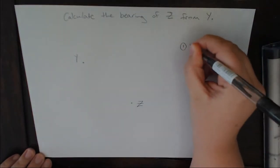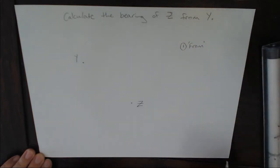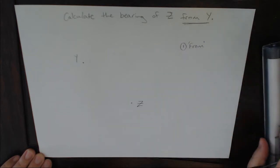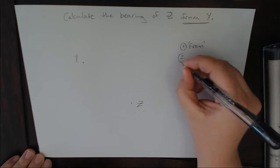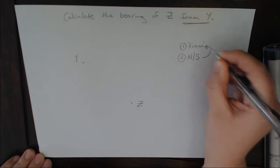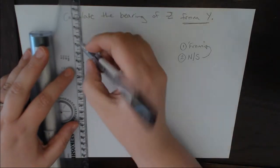So the first one is find the from point and we underline that from point so that we do not forget it. Second step is to draw a north-south line on the from point. So I take my ruler and remember I'm measuring from the symbol not the word, and I'm drawing my north-south.